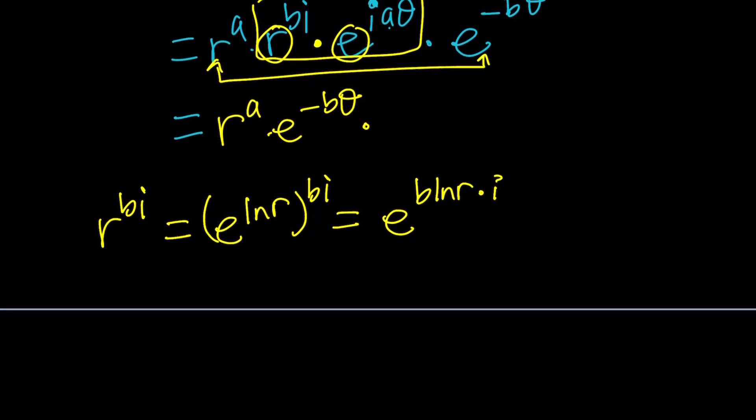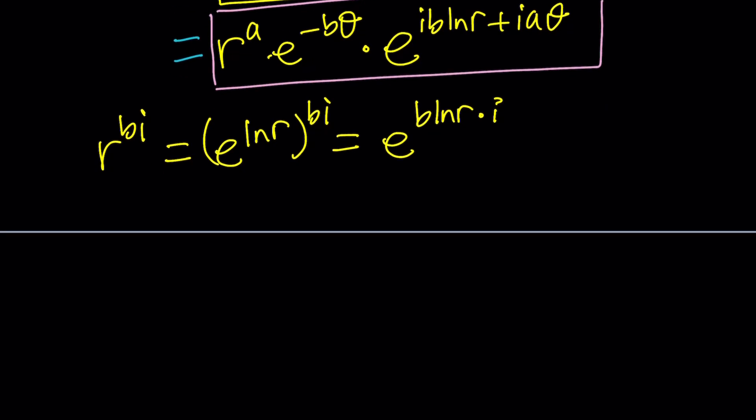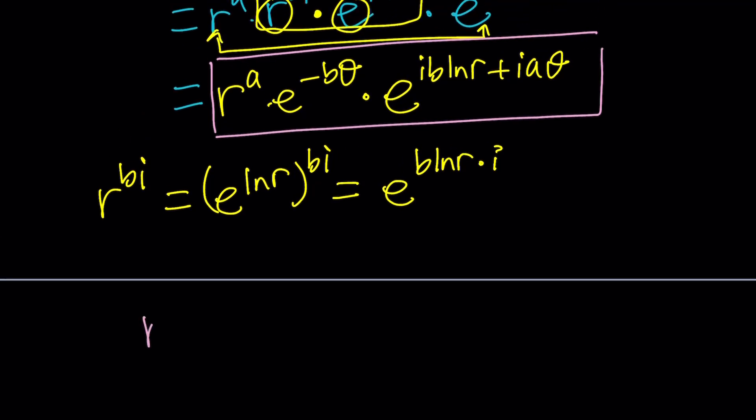But now we're going to get the following. E to the power I B ln R plus I A theta. Now we were able to combine them, right? So here's what we have so far as our Z to the Z. Again, that looks pretty complicated, doesn't it? But we're going to try to simplify as much as possible. Now we have these two things together first. That makes the modulus. And this part here can actually be written as E to the power I times B ln R plus A theta. Okay? So far so good. I hope you're following.